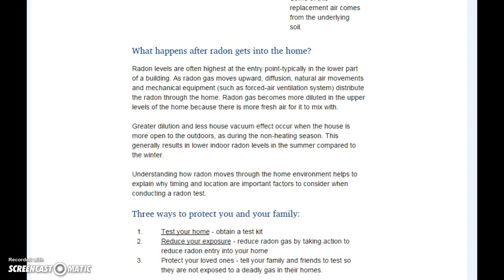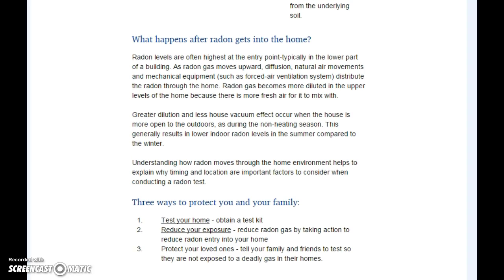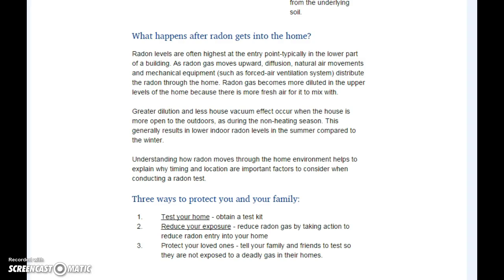After radon enters a home, levels are often highest at the entry point — typically the lower part of the building or the basement — but it moves upward, and air conditioning distributes it throughout the home. Greater dilution occurs when the house is more open to the outdoors, generally resulting in lower indoor radon levels in summer compared to winter. Three ways to protect yourself: test your home by obtaining a test kit; reduce radon entry into your home to protect your loved ones.